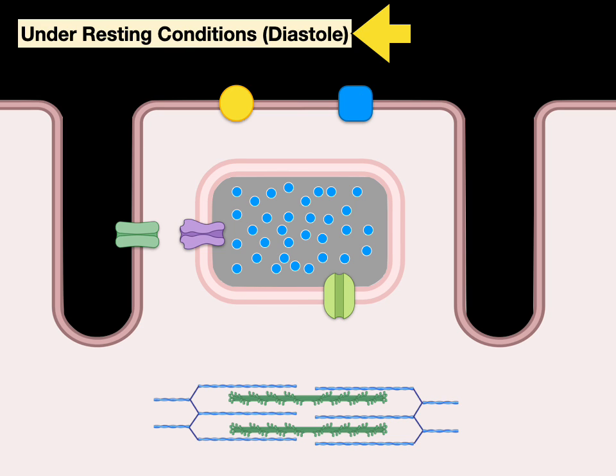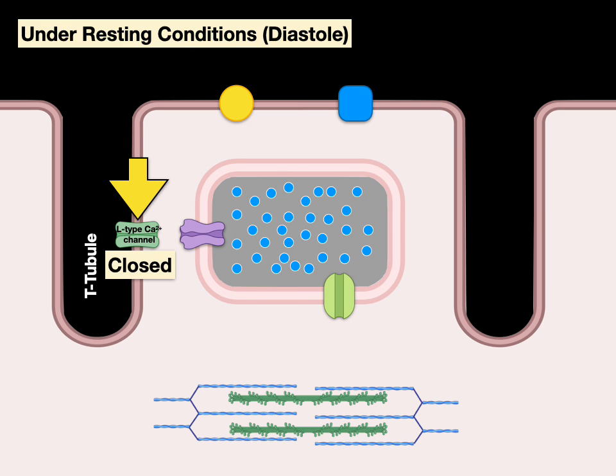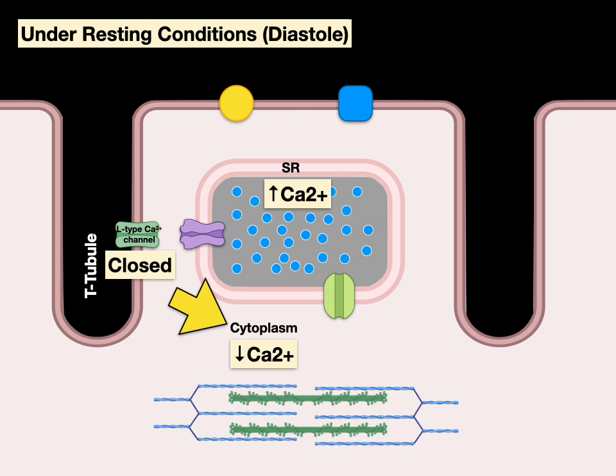Under resting conditions, during diastole, the L-type calcium channels are closed, there's a lot of calcium inside the SR, and very little calcium in the cytoplasm, and the myofilaments are relaxed.